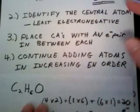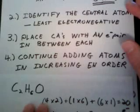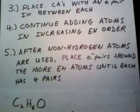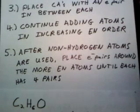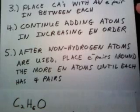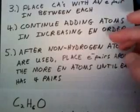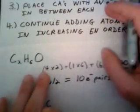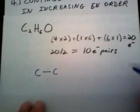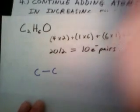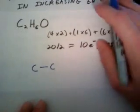The next step is to continue adding atoms in increasing electronegativity order. And the next step following that one is that if, after all non-hydrogen atoms are used, we're going to place electron pairs around the more electronegative atoms until each has four pairs. So you add the non-hydrogen ones first, and then you take care of step five. And then after that, you start adding the hydrogens. So if we take care of that here, well, let's put the oxygen on one of these two carbons. I'm just going to choose the one on the right.